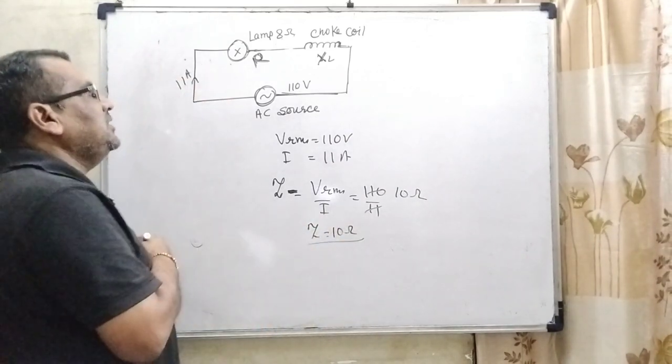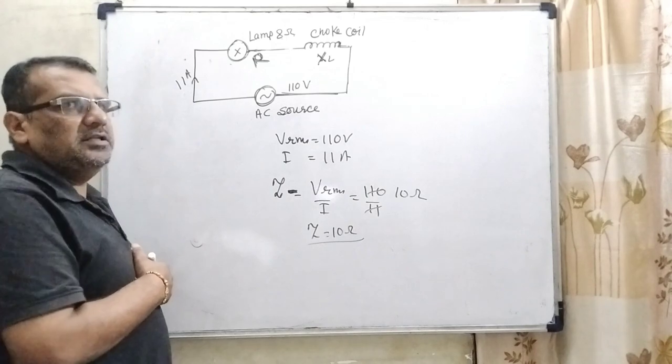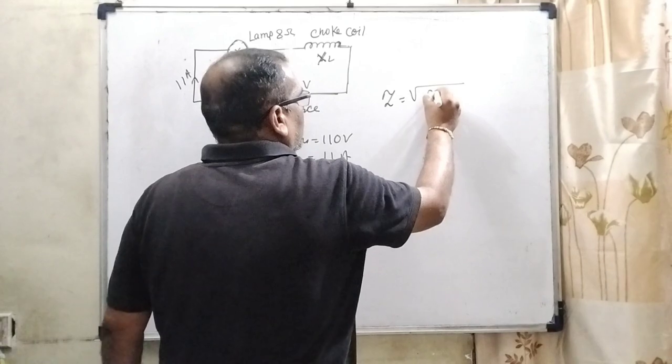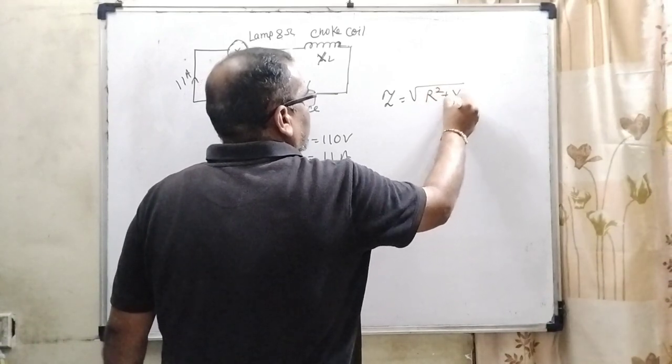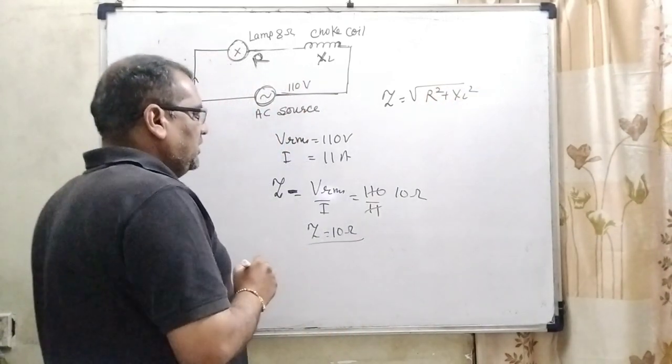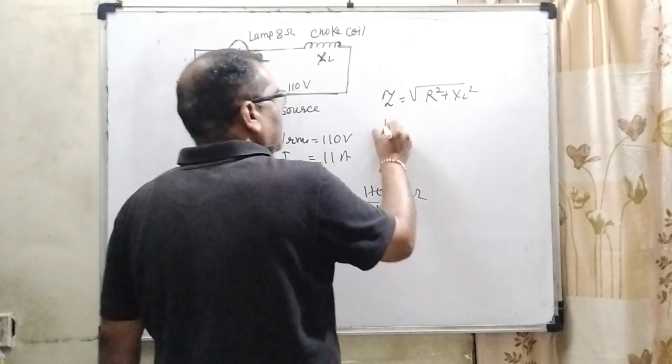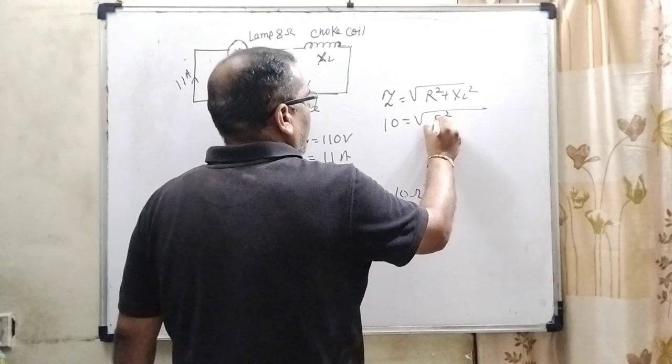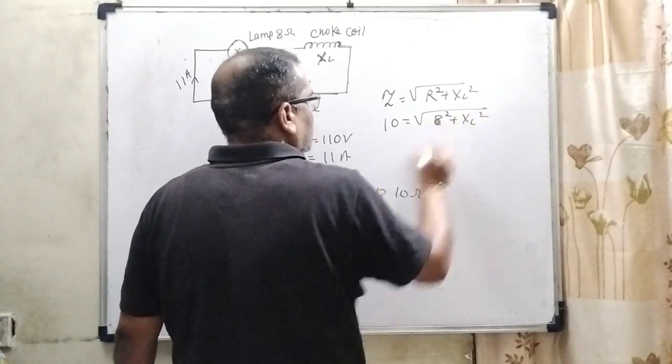And here resistance and inductive reactance are in series. So, net impedance Z equal to root R square plus XL square. What is Z? Z is given that is 10, R is given 8. So, therefore, 8 square plus XL square.